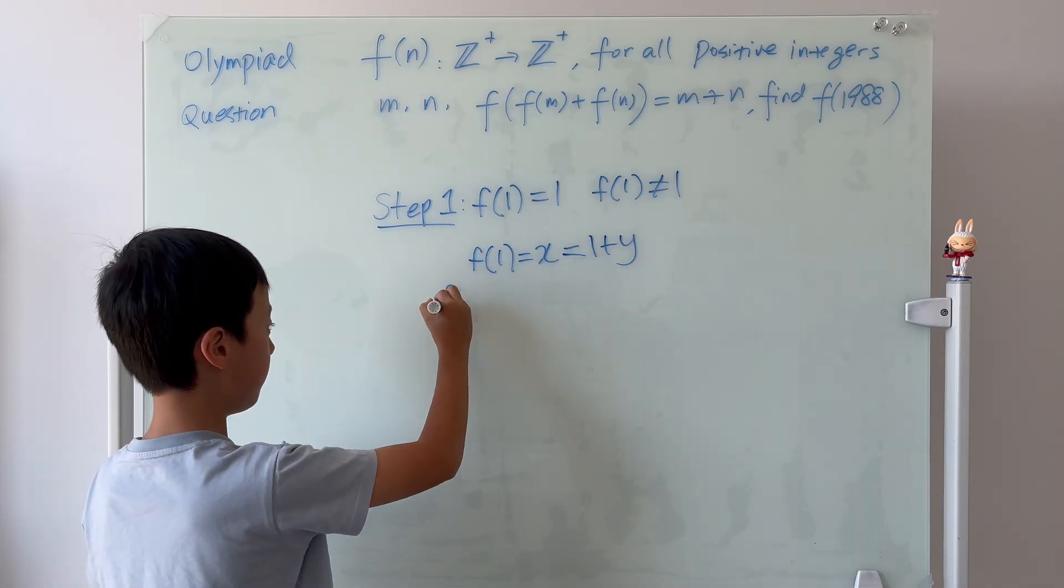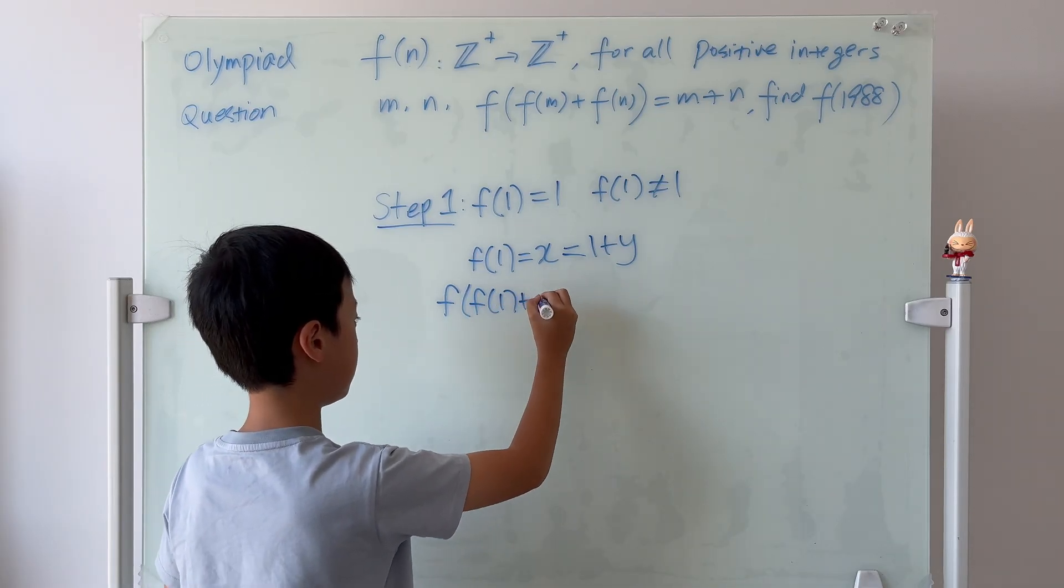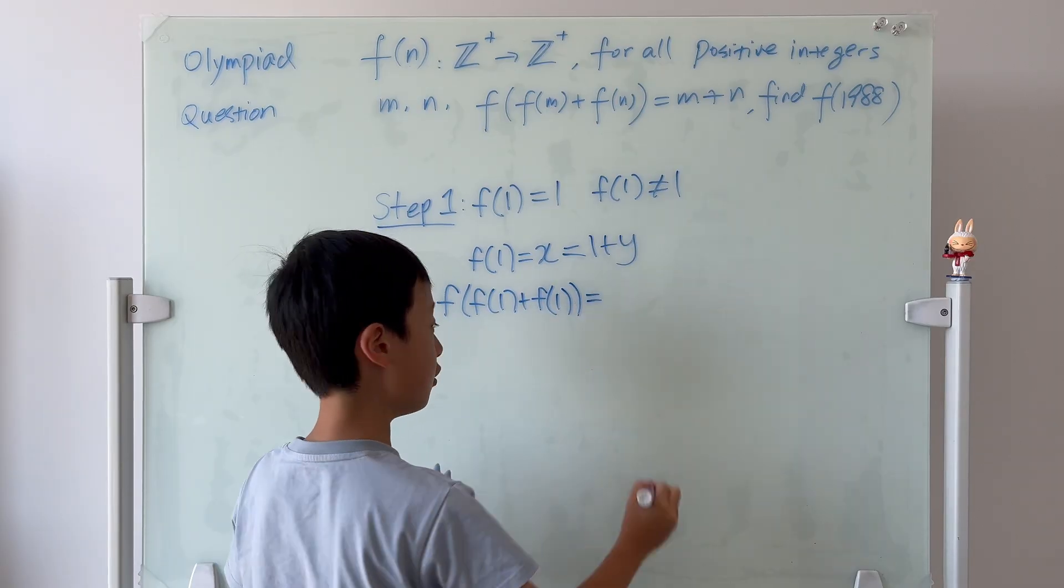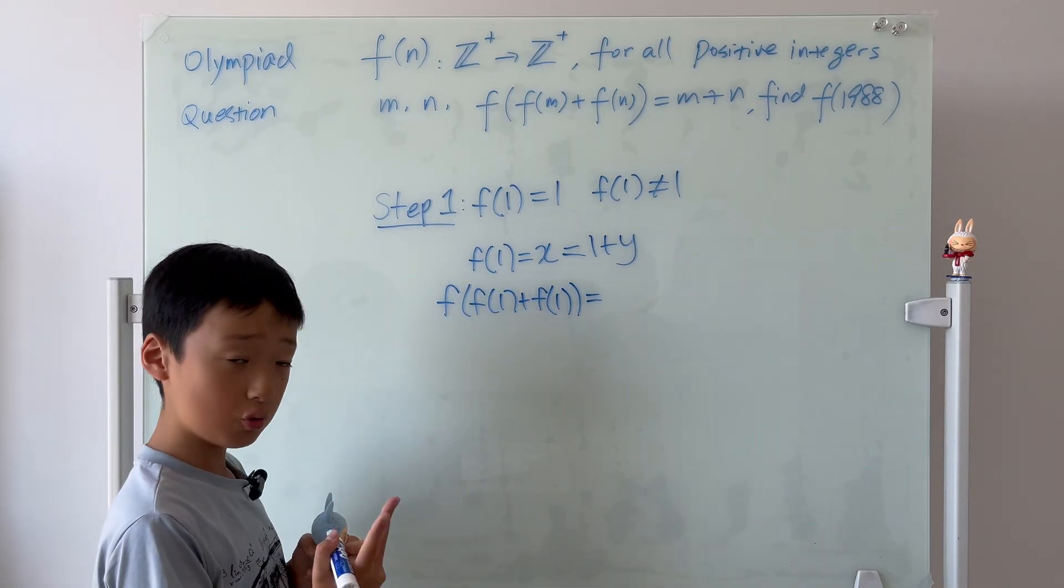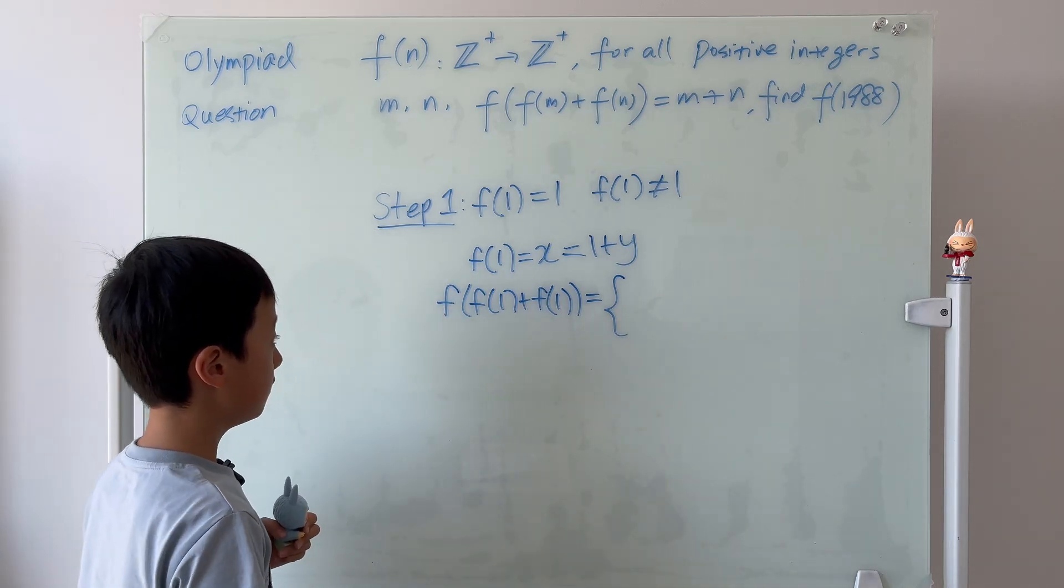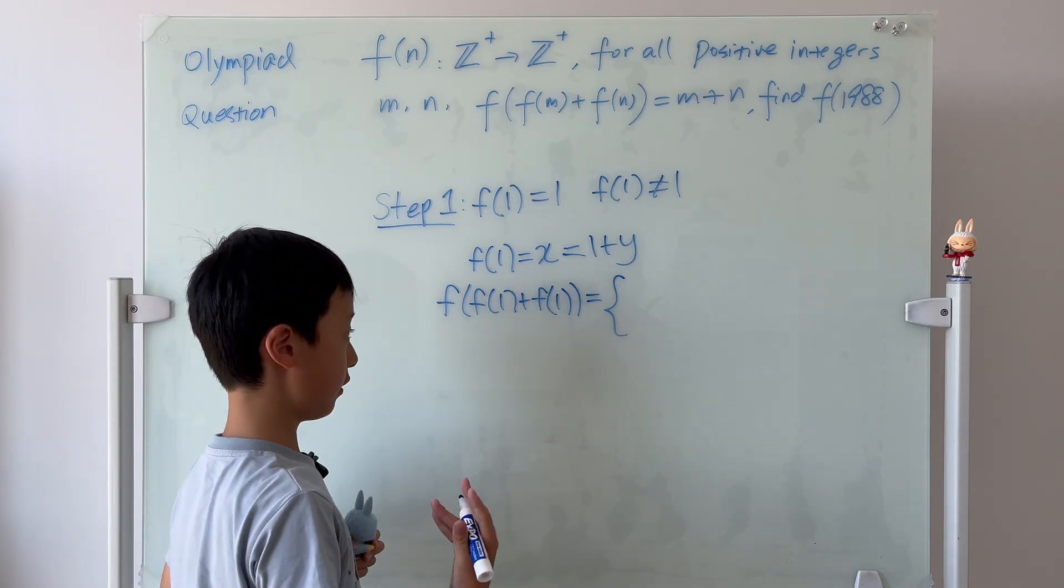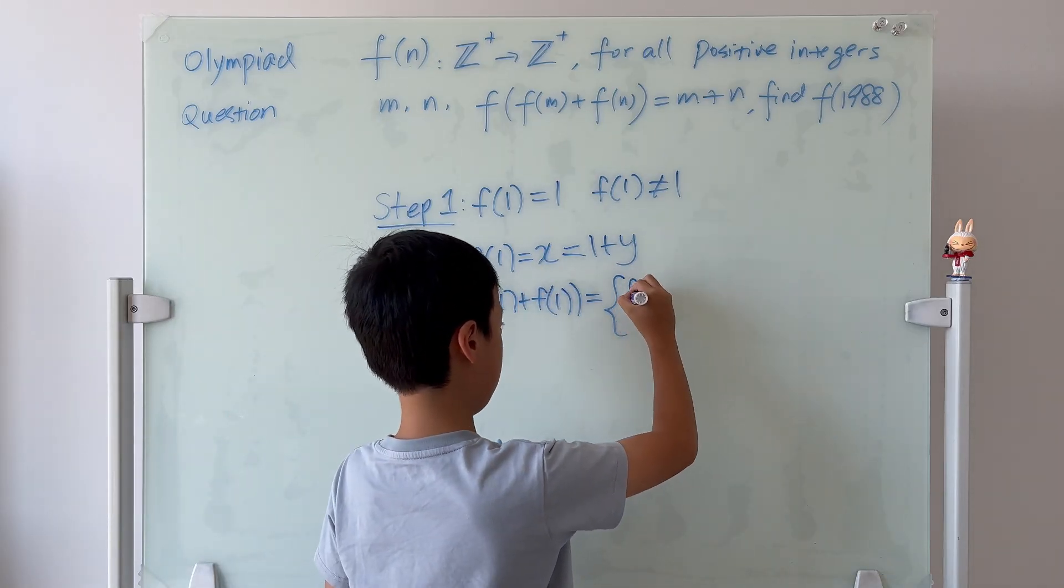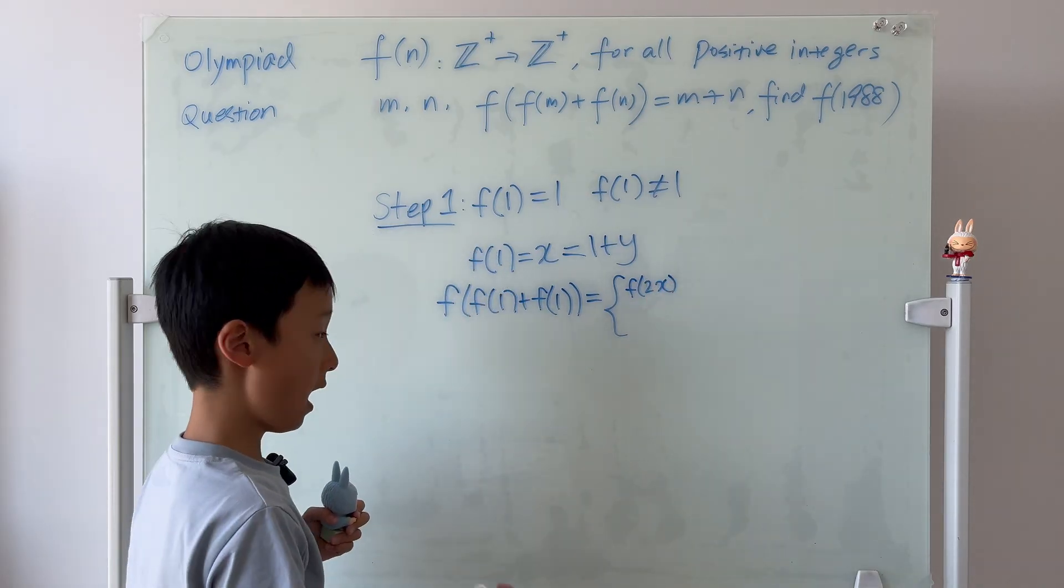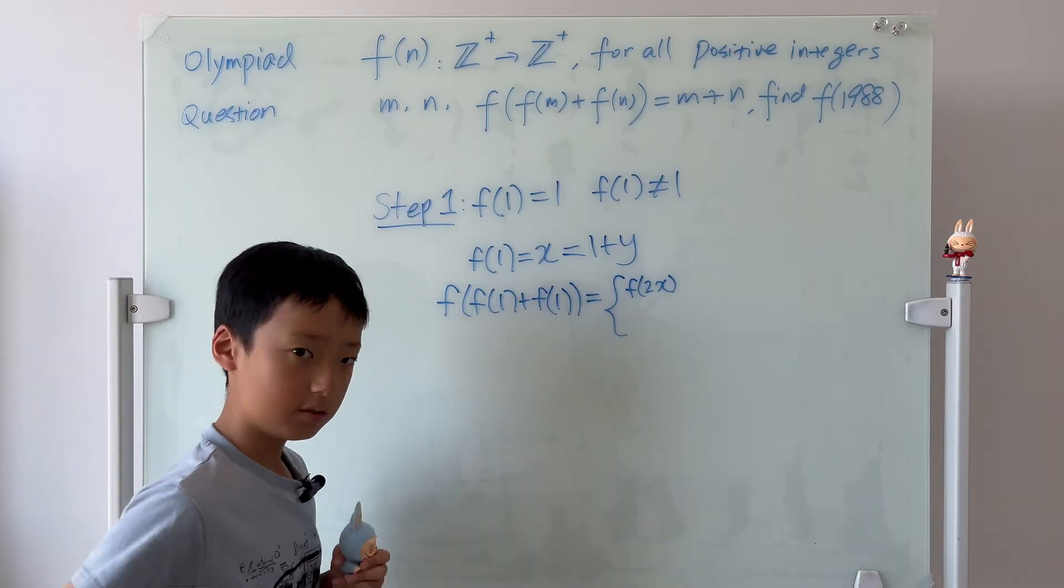So, we know that f of 1 plus f of 1 is equal to, there are two answers here. One of them is, we know that f of 1 is x and f of 1 is x, right? So, it's just f of 2x. And the second one is, by using the definition, it's 1 plus 1, which is 2.